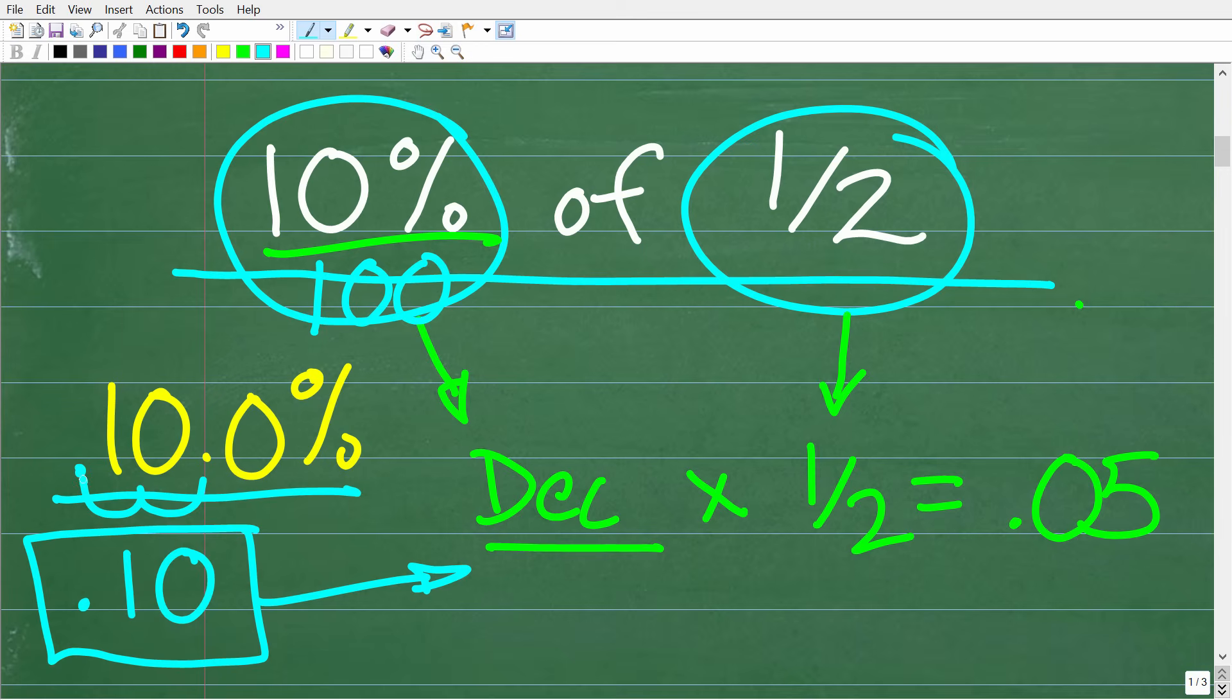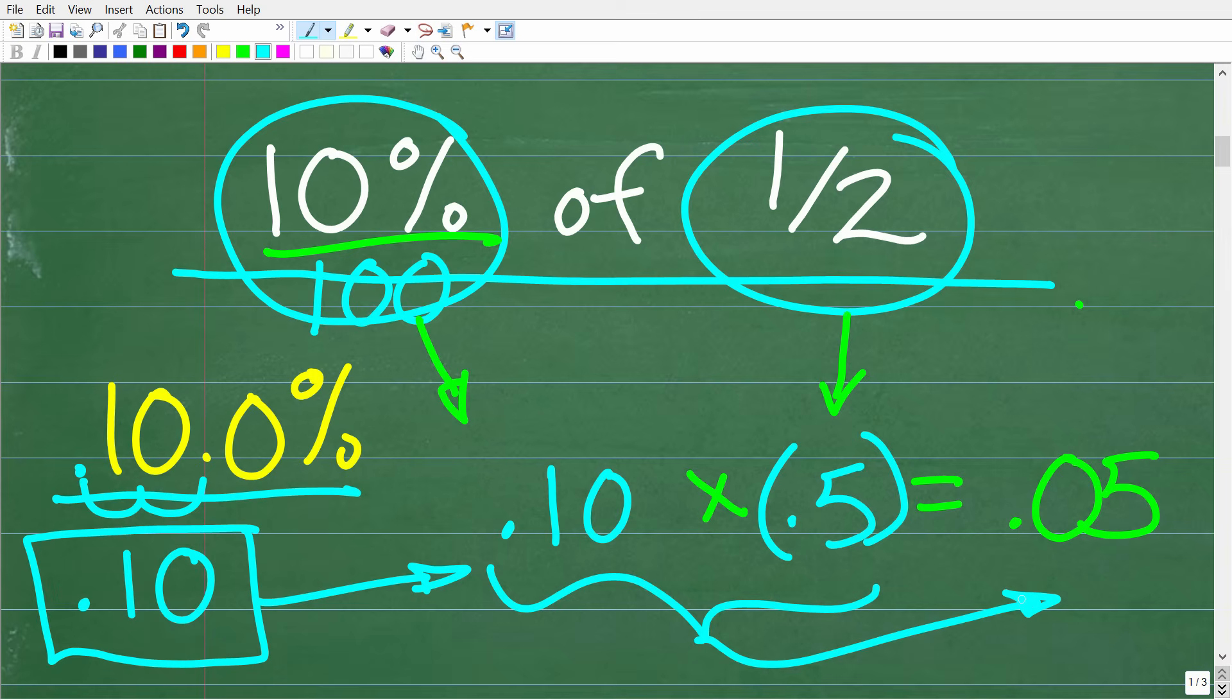All right, so now that we have our 0.10 or our 10 percent expressed as a decimal, what we're going to do is take that 0.10 and multiply it by one-half. Now in our calculator you're probably going to want to change that one-half to 0.5. So it's going to be 0.10 times 0.5. And when you do this calculation, you're going to get 0.05 as your answer.